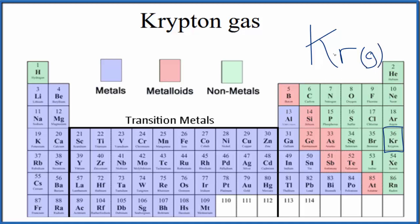So this is the formula for krypton gas, just Kr. We assume there's a 1 here, although we don't write it.